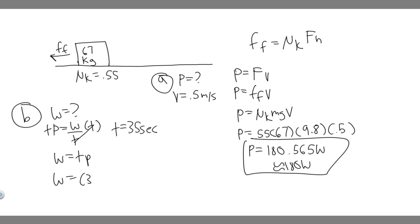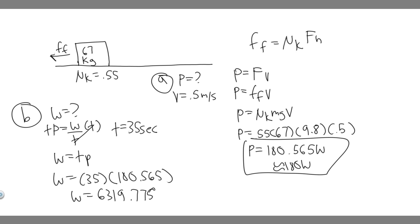We're pushing it for 35 seconds and multiplying by the power of 180.565 watts. Go ahead and plug this in: 180.565 times 35. When you do that, you're going to get the work equals 6,319.775 joules.